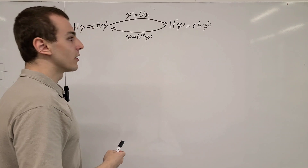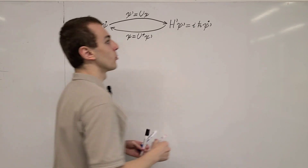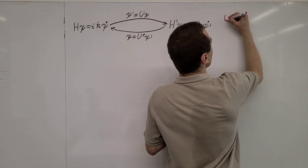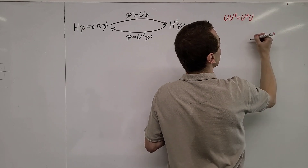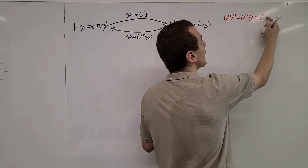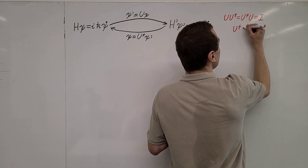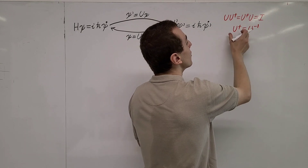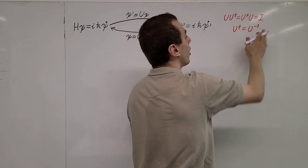Let's write down the property of this unitary operator — what makes it unitary. By definition, it has to satisfy this relationship: U*U-dagger equals U-dagger*U, and this has to equal the identity operator I. Another way of writing this is U-dagger equals U-inverse. So the inverse is the same as taking the Hermitian adjoint. This defines our unitary operator.